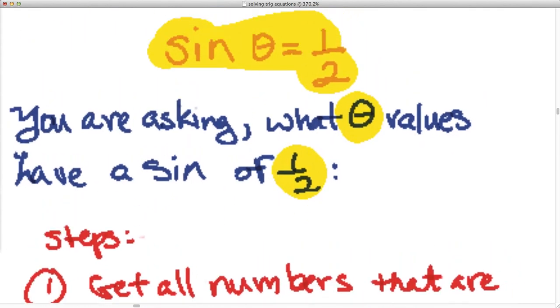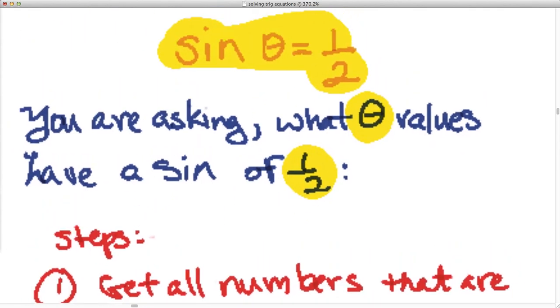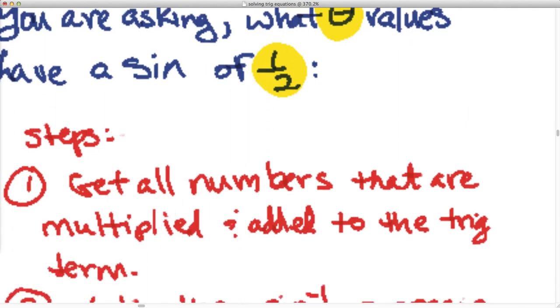Well, the first step is to get any numerical values that are attached to the trigonometric function on the other side. So for instance, if this was 3 minus 6 sine theta, you'd have to subtract the 3 over, divide both sides by 6. I'll show you an example of that in the example videos.